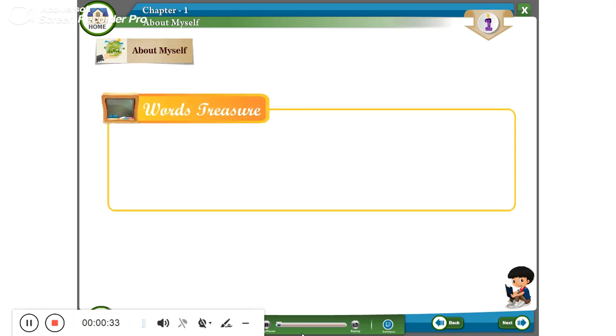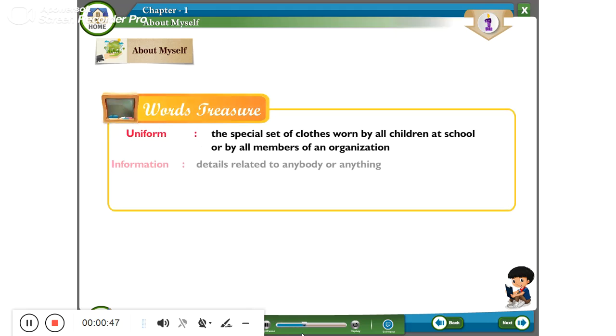Words Treasure. Uniform: the special set of clothes worn by all children at school or by all members of an organization. Information: details related to anybody or anything. Favorite: most liked. Identity: who or what something or someone is.